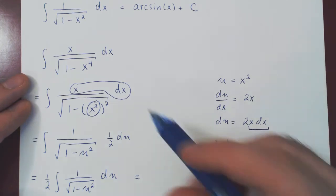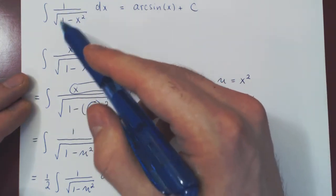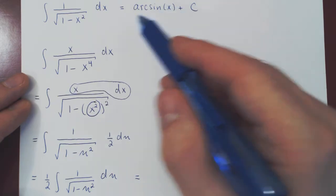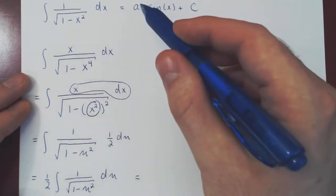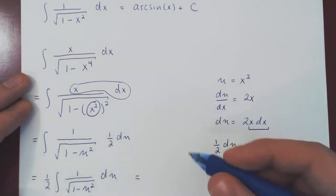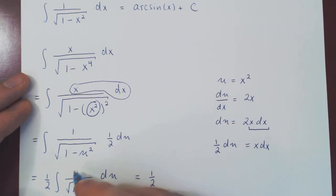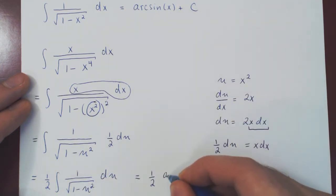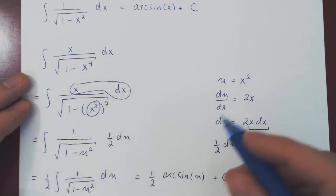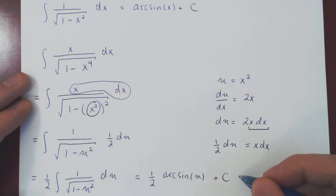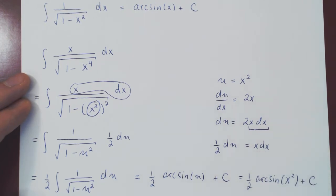And this is rather simple, right? If you integrate 1 over the root of 1 minus x squared dx, you get arc sine of x. This is now the same integral, but instead of x it's a u. So this will be 1 half, don't leave it behind, arc sine of u. And in the end, we want the final answer to be a function of x, so we replace u by x squared. And so we get 1 half arc sine of x squared plus the constant of integration.